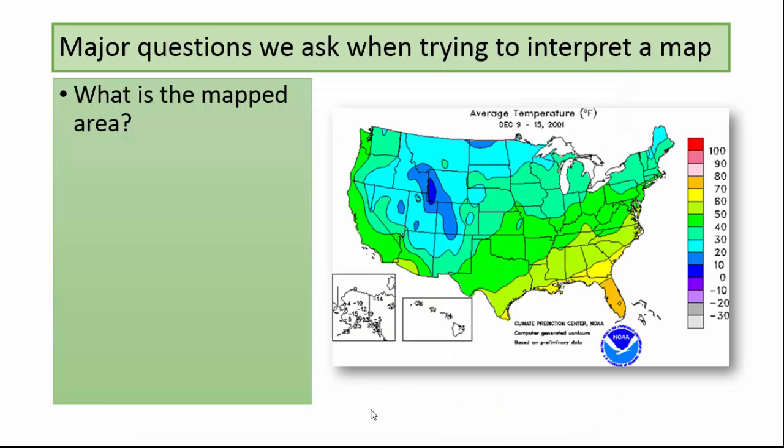The first question we'll ask is: what is the mapped area? In this case we are looking at the continental United States with insets of Alaska and Hawaii.